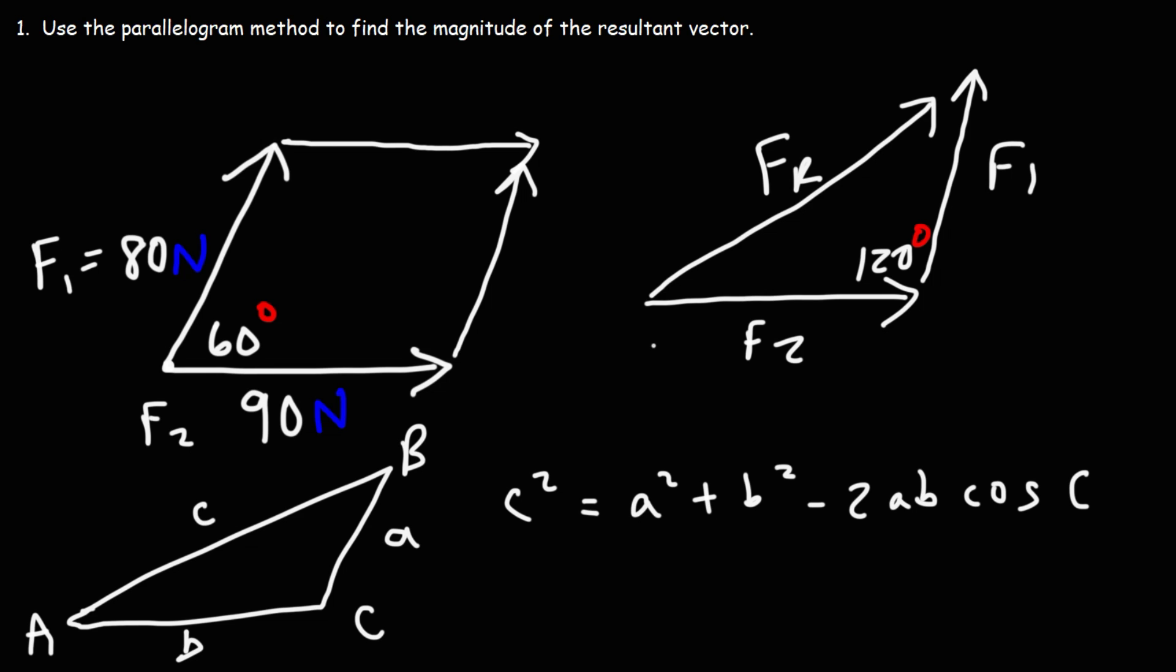So we have F2, F2 is 90. And we have F1, F1 is 80. Those are side lengths. So what I'm going to do is I'm going to make angle C 120. Lowercase c is going to be FR. B, lowercase b, that's F2. And lowercase a is going to be F1.